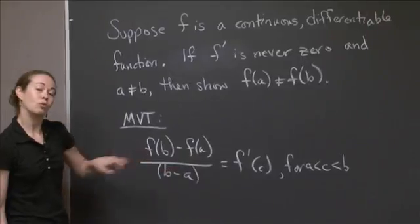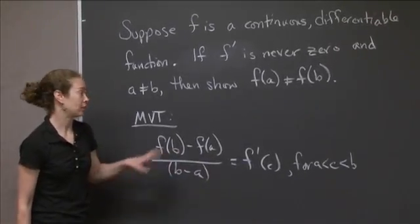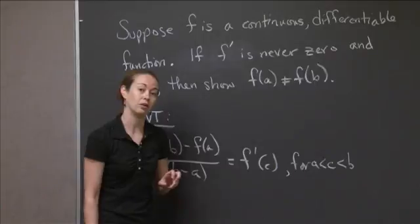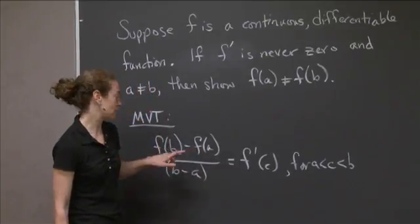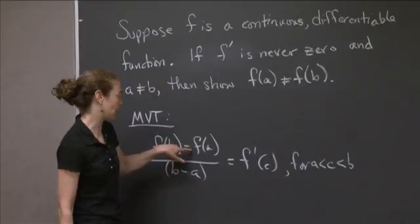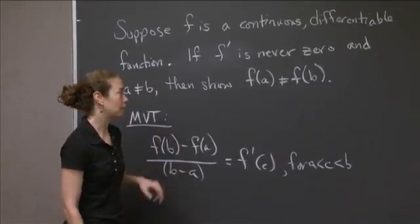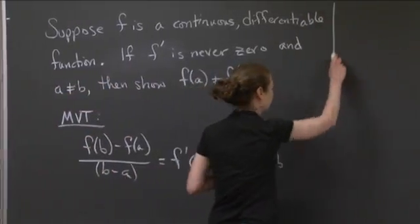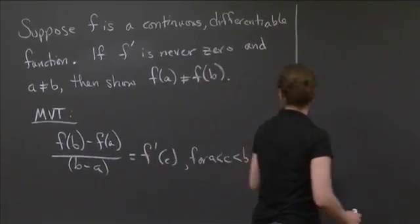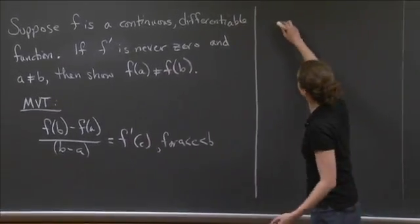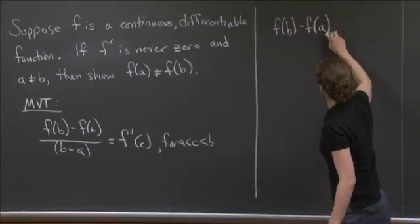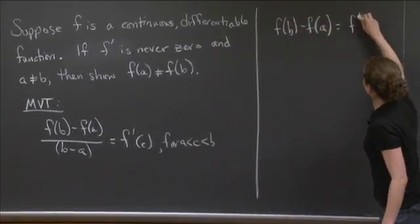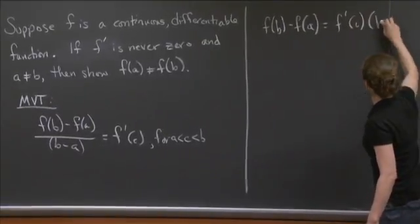So we want to know whether or not f(b) minus f(a) can ever be zero. That's what we're trying to show—that it cannot be zero. So we're going to isolate this expression and show that this subtraction cannot be zero. Well, how do we do that? Let me come over here to give us a little more room. I'm going to rewrite the Mean Value Theorem and multiply through by b minus a.